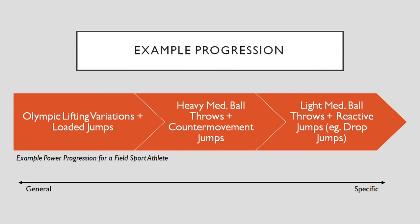As an example, taking all this information into consideration, here is a very general example progression for a field sport athlete — someone who requires running and jumping type movements. We can start early in the training plan with Olympic lifting variations and maybe some loaded jumps, which are heavier with less velocity and less stretch shortening cycle involvement. We can then progress to heavy medicine ball throws and counter movement type jumps, introducing some faster power and a little stretch shortening cycle. Finally, as we get more specific, we move to lighter medicine ball throws in multiple directions and reactive type jumps like repeat jumps or drop jumps — progressing from general to specific.